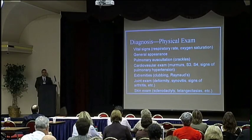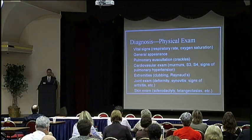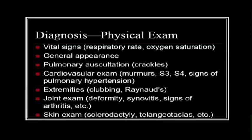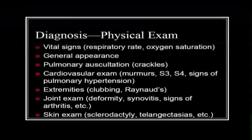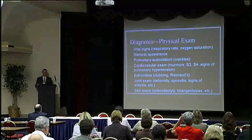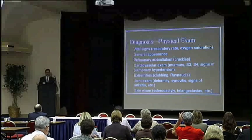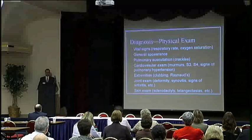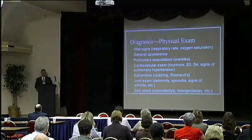For physical examination, vital signs are important — respiratory rate and oxygen saturation. I like to also get oxygen saturations while the patient is ambulating, as that stresses the pulmonary system and can reveal exertional desaturation not present at rest. Assess general appearance and signs of collagen vascular disease. Auscultate the lungs for crackles, which can be a big clue. On cardiovascular exam, check for murmurs, S3 or S4, and signs of pulmonary hypertension, which is associated with interstitial lung diseases and collagen vascular diseases.